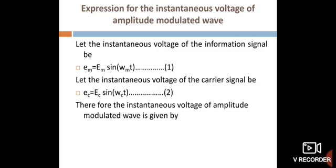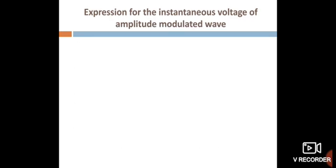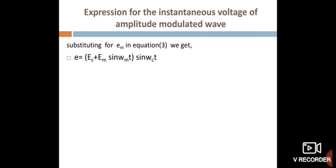In the amplitude modulated wave, the amplitude of the carrier signal is changed in accordance with the amplitude of the information signal. Therefore, the instantaneous voltage of amplitude modulated wave is given by: E = (Ec + Em sin(ωm t)) × sin(ωc t). This gives: E = Ec × [1 + (Em/Ec) sin(ωm t)] × sin(ωc t), taking Ec common.